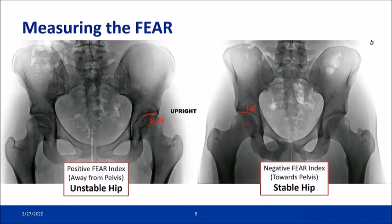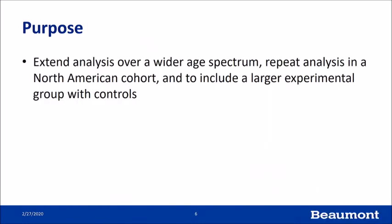The FEAR index is calculated by measuring the articular angle of the acetabulum and the central third of the epiphysial scar. A positive angle opens laterally and is suggestive of instability, while a negative angle opens medially and is associated with stability.